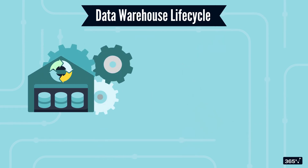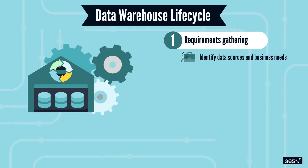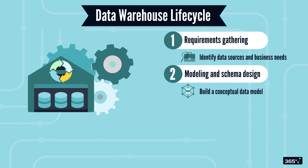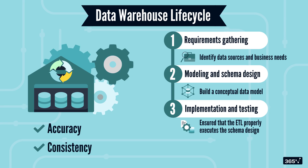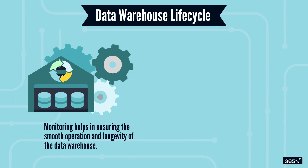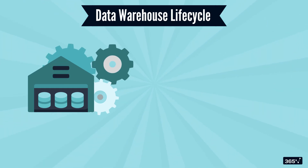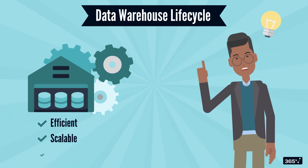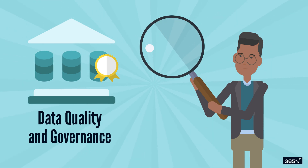And there you have it — the complete lifecycle of a data warehouse. We started with requirements gathering to identify data sources and business needs. Then moved to modeling and schema design, where a conceptual data model was built to handle the required data sources. The implementation and testing phase ensured that the ETL properly executes the schema design and maintains high data quality. Once confident with the quality and accuracy of data, the warehouse is deployed. Post-deployment, monitoring helps ensure the smooth operation and longevity of the data warehouse. And finally, we need a mechanism for handling potential downtimes and failures. Understanding these phases helps ensure your project is efficient, scalable, and valuable to your business. Thanks for joining, and let's explore why data quality and governance are important for designing data warehouses next. We'll see you next time.